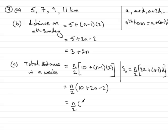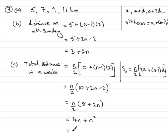Expanding the bracket by multiplying by n over two: eight times n over two gives four n, and n over two times two n — the twos cancel — gives plus n squared. Factorizing by pulling out a common factor of n, we have n times four plus n, which we can write as n times n plus four, and that's the expression we had to prove.